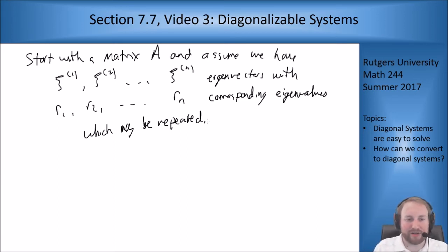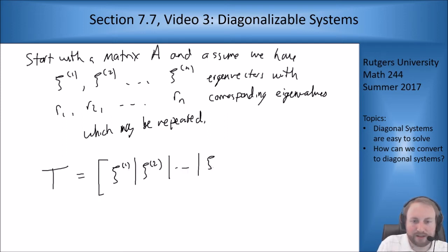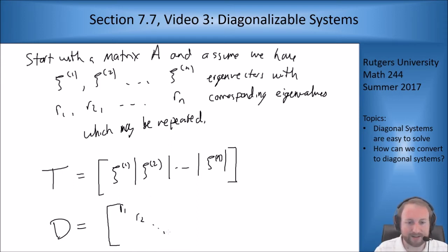What I want to do is make a new matrix T, which is going to be all the eigenvectors stacked in a matrix: C1, C2, Cn. All of these are n element vectors, so if I stack them up this way I get an n by n matrix. I'm also going to give another matrix D to be the matrix that has the R's along the diagonal in the same order as these vectors. So R1, R2, dot dot dot, Rn, and zeros everywhere else.